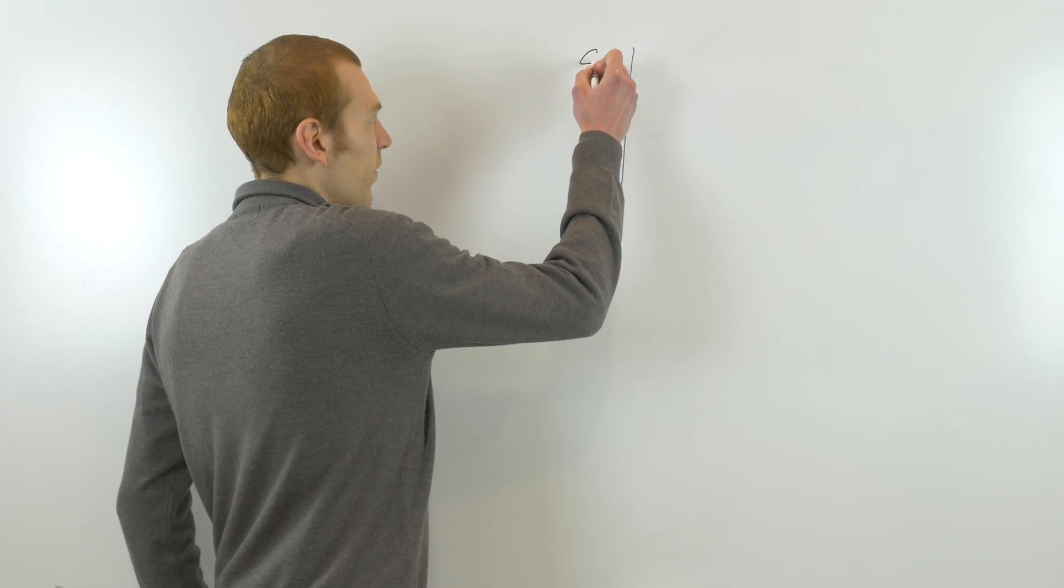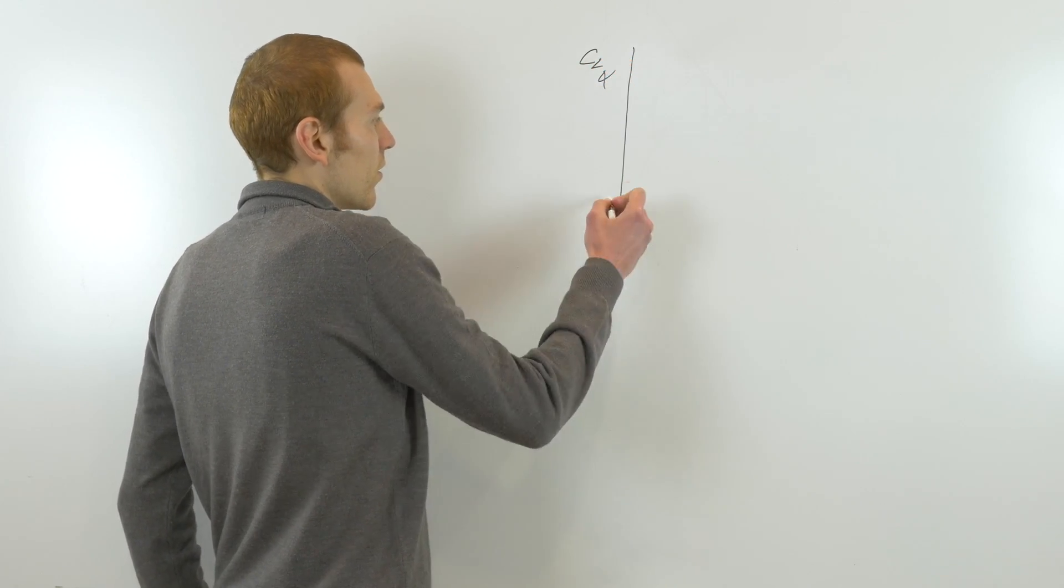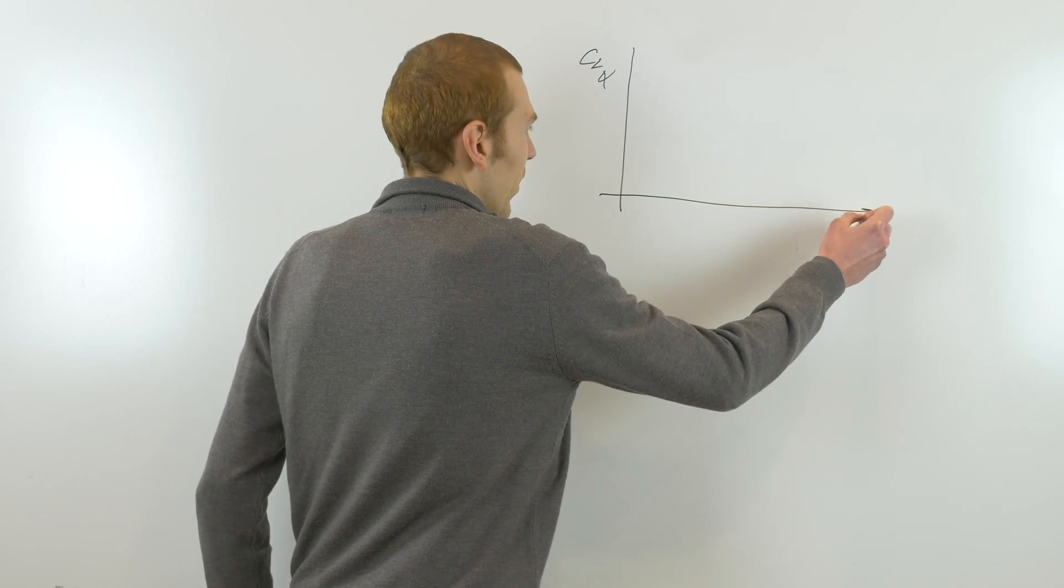On this axis we have the CL-α, and on the horizontal axis we have the Mach number.